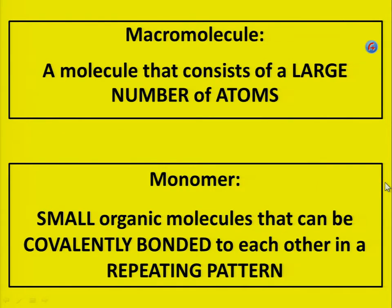Macromolecule: a molecule that consists of a large number of atoms. Monomer: small organic molecules that can be covalently bonded to each other in a repeating pattern.